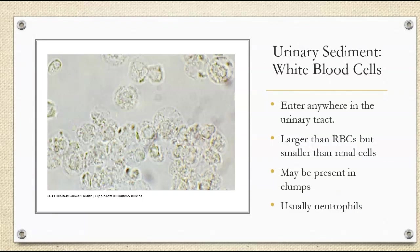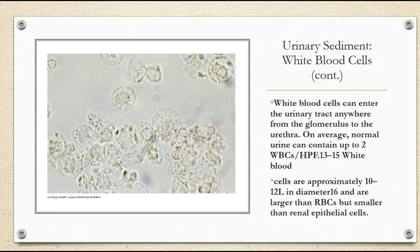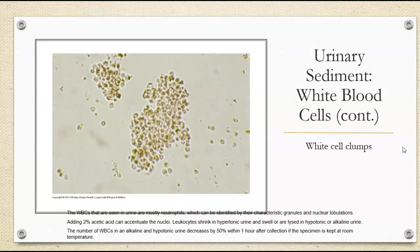Moving into white blood cells — these can enter anywhere in the urinary tract. They're larger than red cells, but smaller than renal cells. We can see them in clumps and they're usually neutrophils, so you can actually see the granules and then the nucleus of these white blood cells. On average, the normal urine can have about two white blood cells per high power field. The cells are approximately 10 to 12 micrometers in diameter — again, larger than red cells but smaller than renal epithelials.